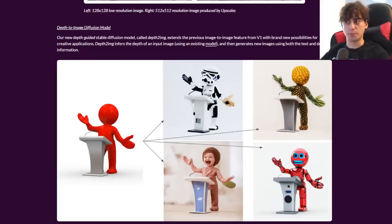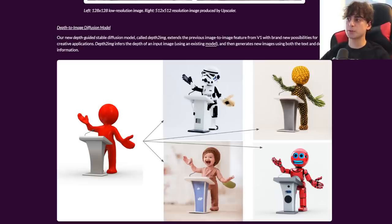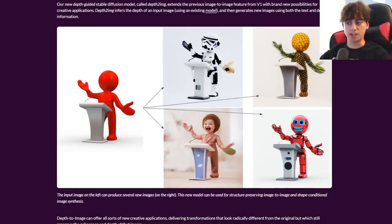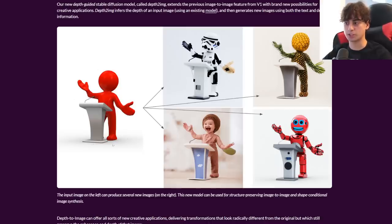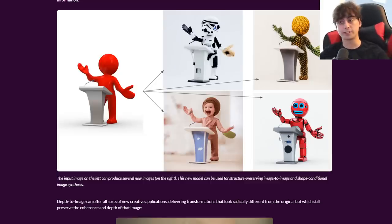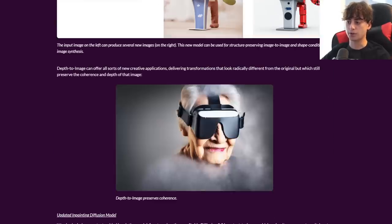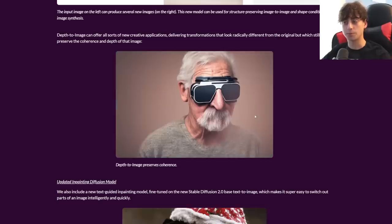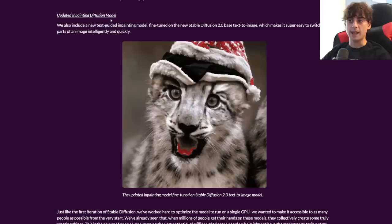They've also got this depth-guided diffusion model called Depth to Image, which is something I'd never even thought about before but it's really interesting. It extends the previous image-to-image feature — now it can detect the depth of a given image and then apply styles and characters accurately to that initial image. You can see it's applying very accurately a Star Wars theme, pineapple theme, a baby, and then a robot. The depth is definitely working because it can detect the depth of the face, arms, and podium. You can even see it with the smoke, where the closer stuff is not as smoked out as the stuff far away.